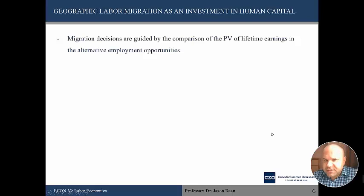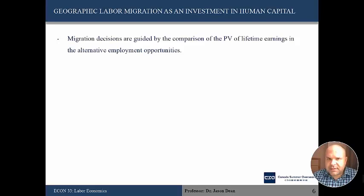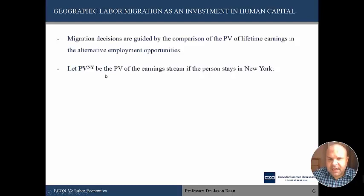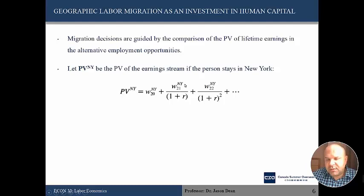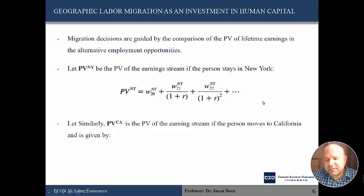Let PVCA be the present value of earnings if the person moves to California — essentially the expected present value of wages they would get there. The net gain is obtained by taking the difference: PVCA minus PVNY. If this amount exceeds the cost of moving M, then the worker would move. This simple framework offers a number of empirically testable propositions. Improvements in economic conditions at the destination increase the chances a person moves, while improvements at home lower the likelihood. An increase in migration costs lowers the net gains, decreasing the probability that a worker moves.